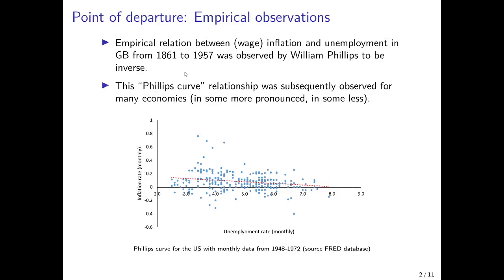As a point of departure, we have the empirical relation between wage inflation and the unemployment rate that William Phillips observed in Great Britain from 1861 to 1957. He observed a negative relationship between the two, and this was then called the Phillips curve relationship, and it was subsequently observed for many economies. Here I've just plotted for the United States the Phillips curve with monthly data from 1948 to 1972 from the FRED database.